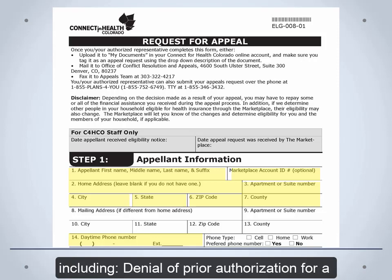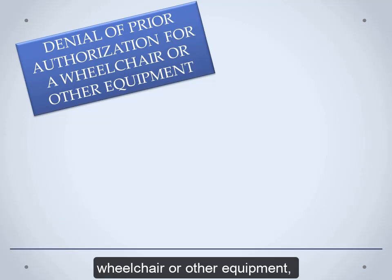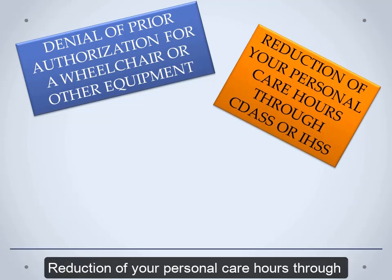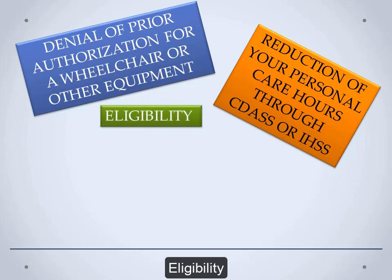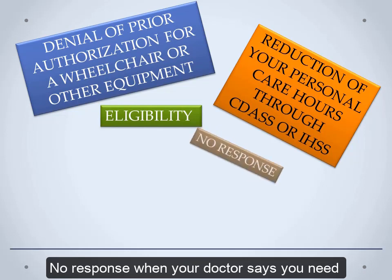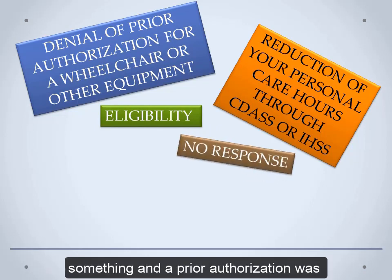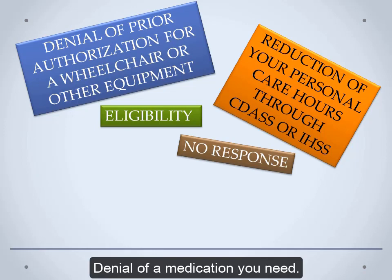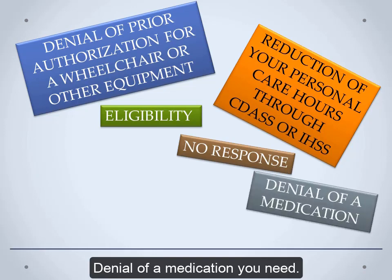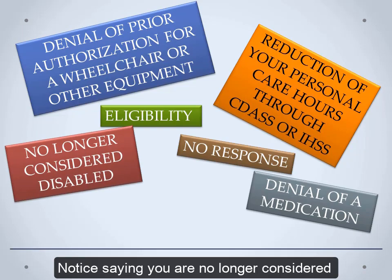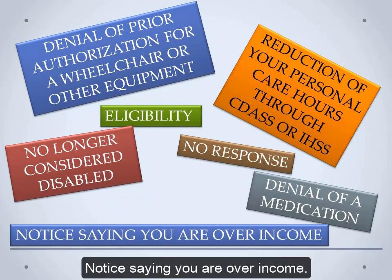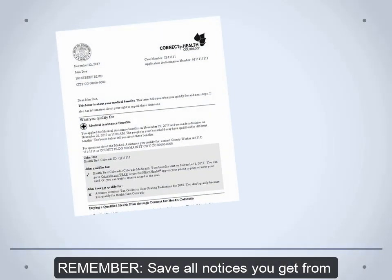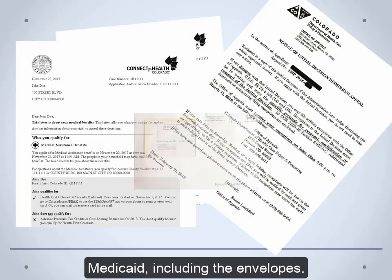Situations you can appeal include: denial of prior authorization for a wheelchair or other equipment; reduction of your personal care hours through CDOS or IHSS; eligibility issues; no response when your doctor says you need something and a prior authorization was submitted; denial of a medication you need; a notice saying you are no longer considered disabled; or a notice saying you are over income. Remember, save all notices you get from Medicaid, including the envelopes.